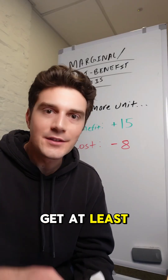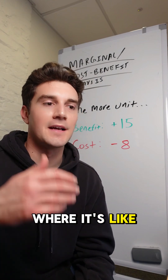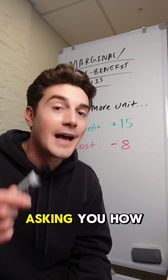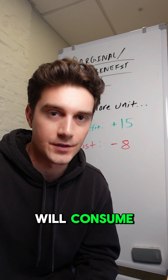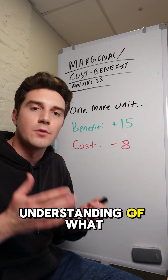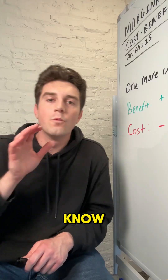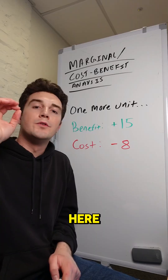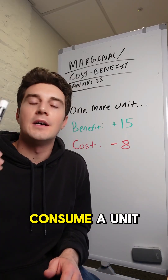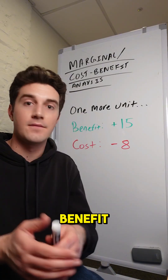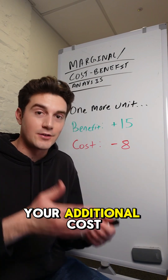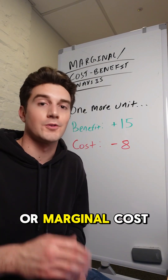You're probably going to get at least one question where it's like a table of benefit and cost values asking you how many units you will consume. Let's start with just the core baseline understanding: you will only consume a unit if your additional benefit, or marginal benefit, is higher than your additional cost, or marginal cost.